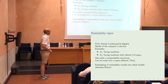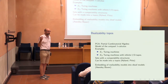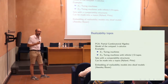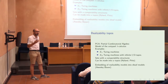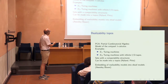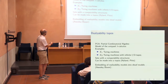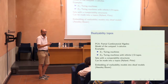The other class of models not presented in the school are the realizability toposes. These are toposes in which everything is computable. You start with a partial combinatorial algebra or a model of the untyped lambda calculus. There are two well-studied models: K1, the first Kleene algebra, which takes the ordinary Turing machines — this is ordinary Turing computability — and K2, the Kleene-Vesley PCA, where you look at Turing machines with infinite input and output tapes.